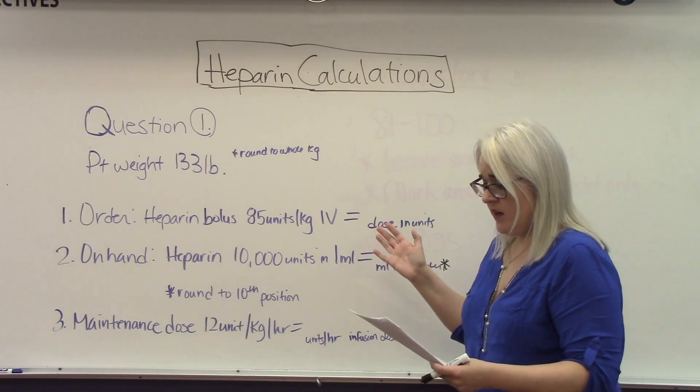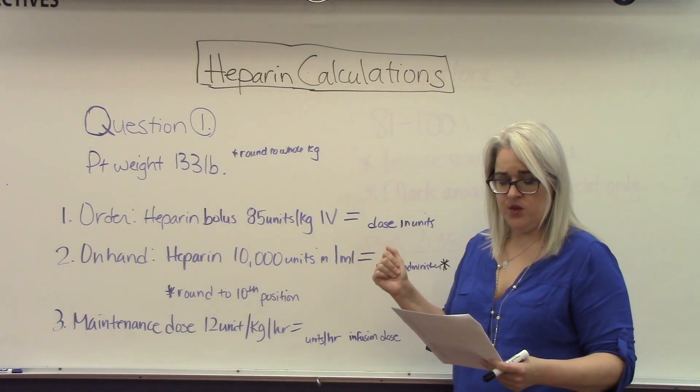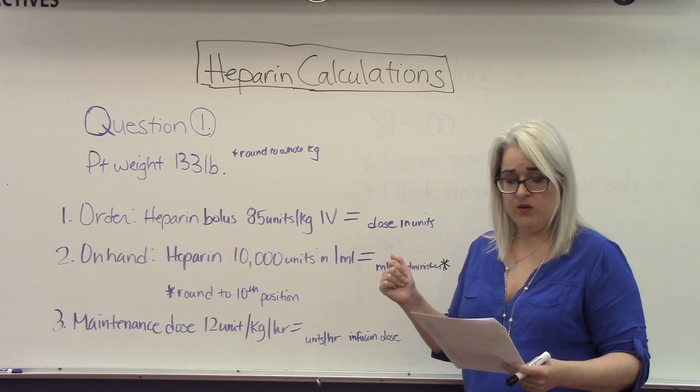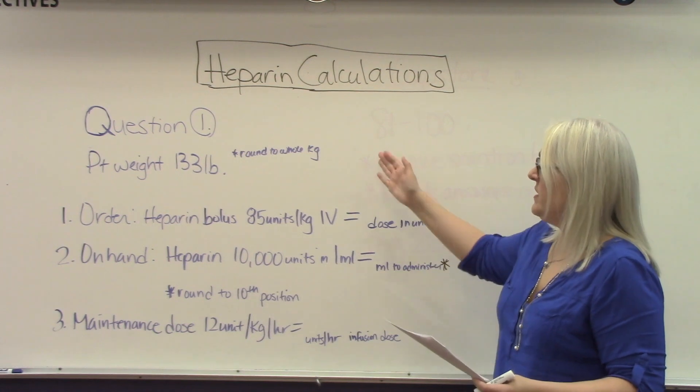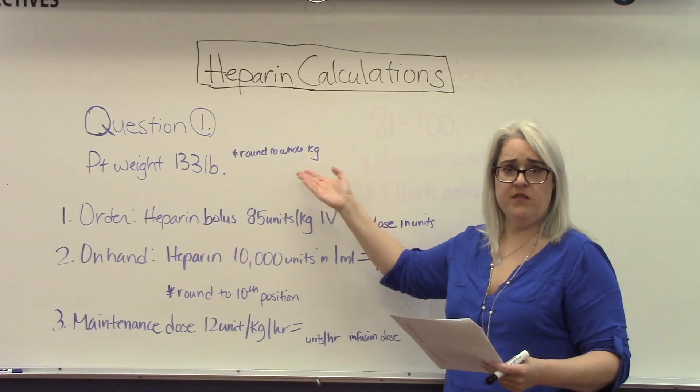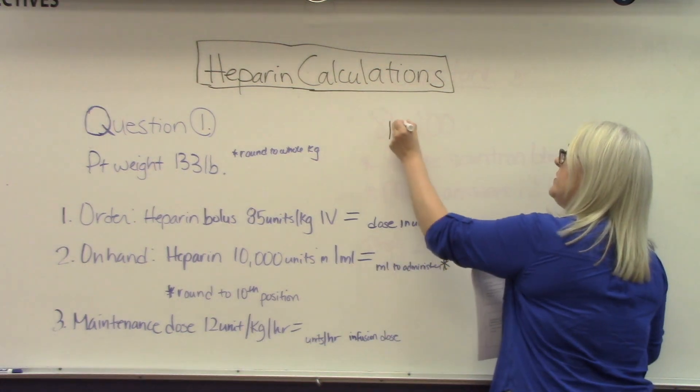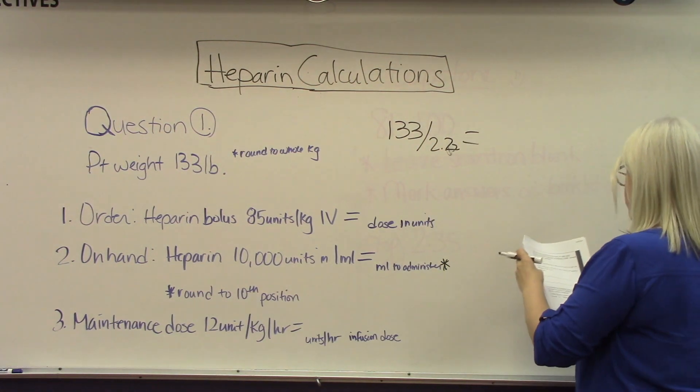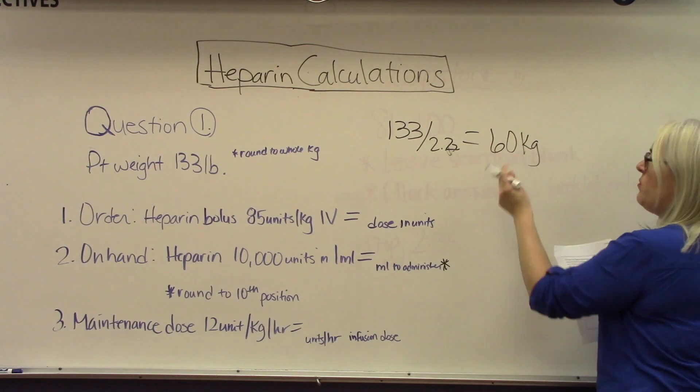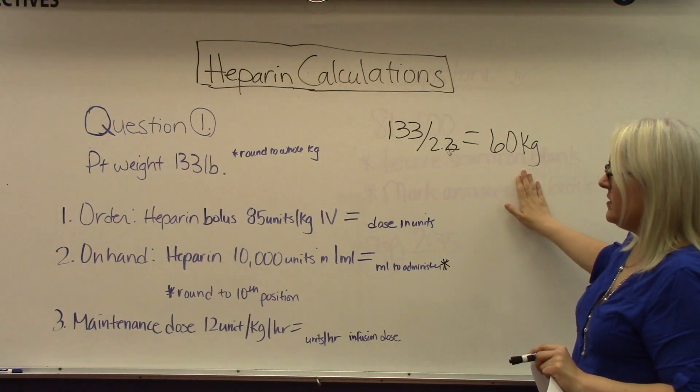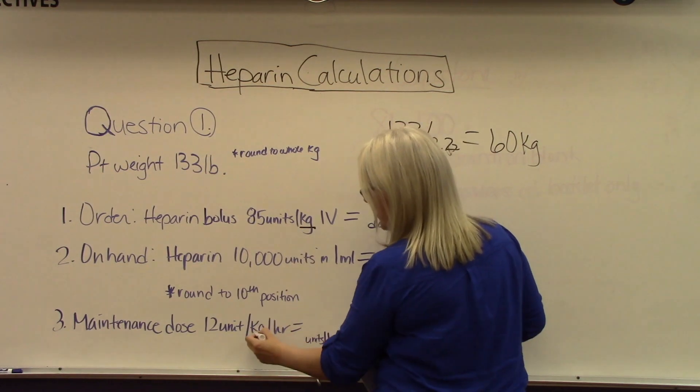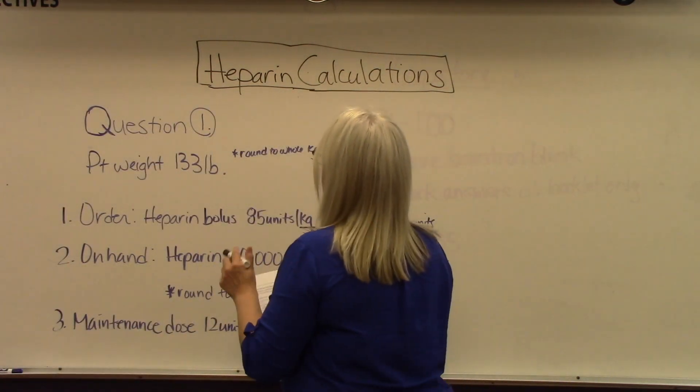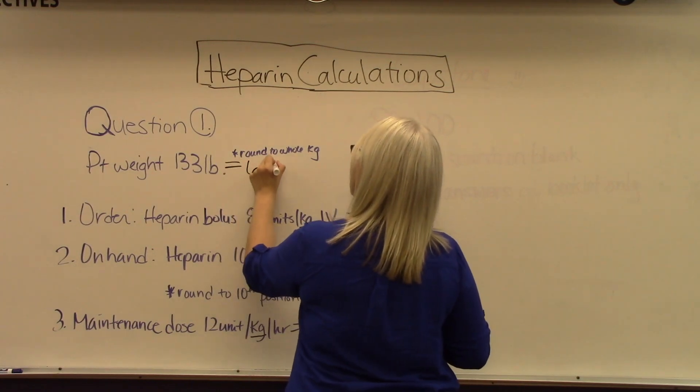This is our first problem. Calculate the heparin bolus dose in units and amount in milliliters for a patient weighing 133 pounds. The instructions state that we should round kilograms to a whole number. So the first thing we need to do is convert 133 pounds to kilograms. We take 133 divided by 2.2, which equals 60 kilograms with our rounding.